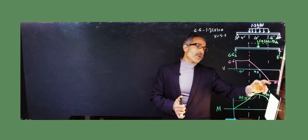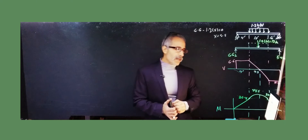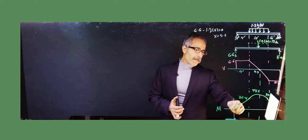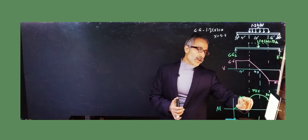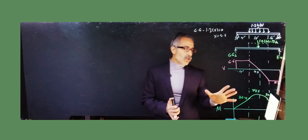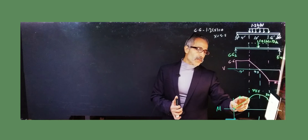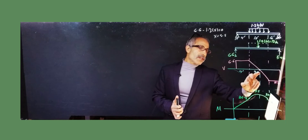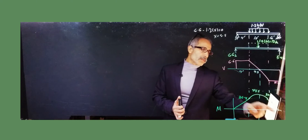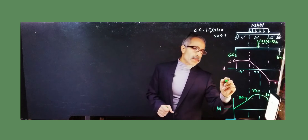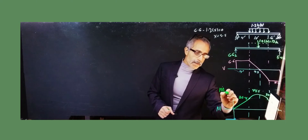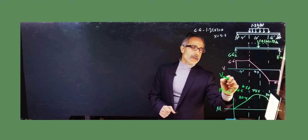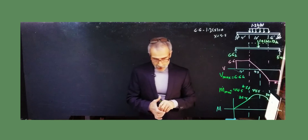Where shear equals zero, the maximum moment occurs. The shear continues down to −5.4 kip, then the reaction brings it back up. For the moment diagram, there is a straight slope in the rectangular-load region, then a parabolic curve in the triangular region. Computing areas under the shear diagram, the moment rises to 26.4, then peaks at 44.5 kip-foot. The maximum moment M_max = 44.5 kip-ft and maximum shear V_max = 6.6 kips.